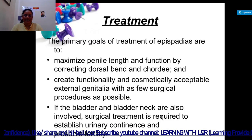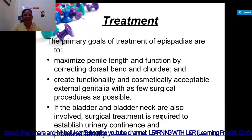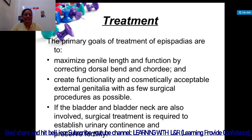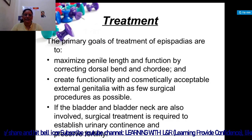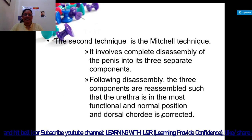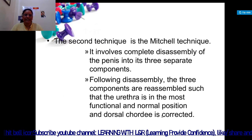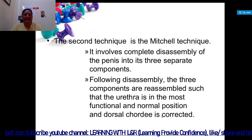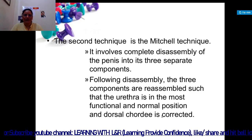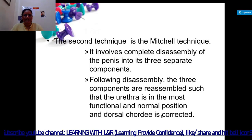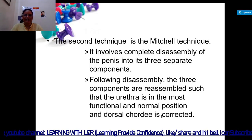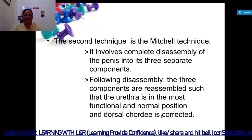After surgery, the appearance is near to normal. If the bladder and bladder neck are also involved, surgical treatment is required to establish urinary continence and preserve fertility. The Mitchell technique involves complete disassembly of the penis into its three separate components. Following disassembly, the three components are reassembled so the urethra is in the most functional and normal position, and dorsal chordee is corrected.